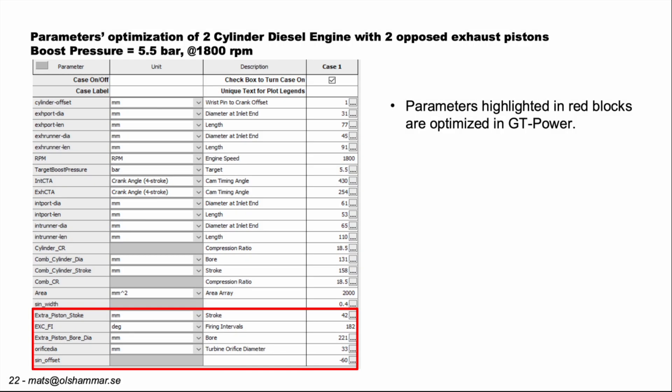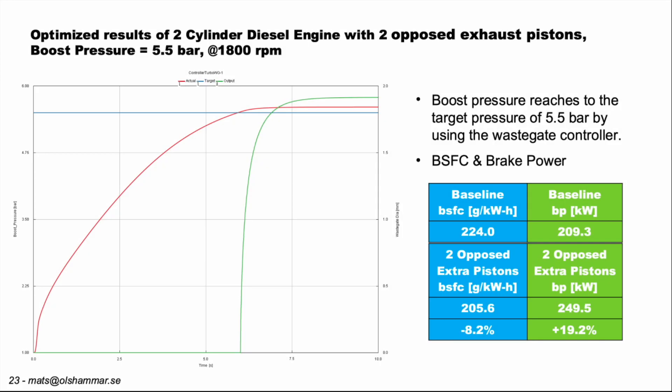We only changed specific parameters for this test — not a full optimization of every parameter. Here we can see that we have reached a stable pressure and the waste gate is open in a stable position. The results show minus 8.2% in fuel consumption and plus 19.2% in power, so it is an advantage to have opposed pistons in the exhaust cylinder.